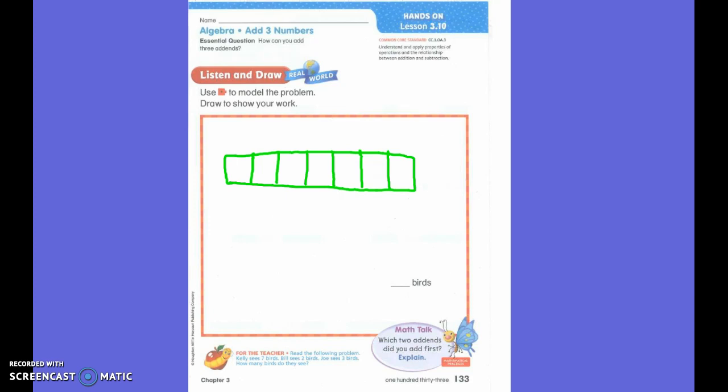How many birds did Bill see? Two. So below that, I want you to draw two more cubes. And how many birds did Joe see? Three.